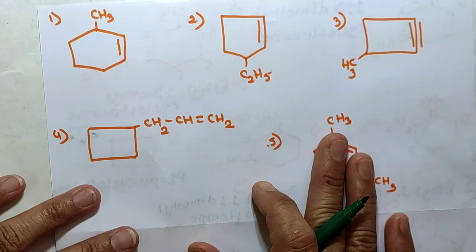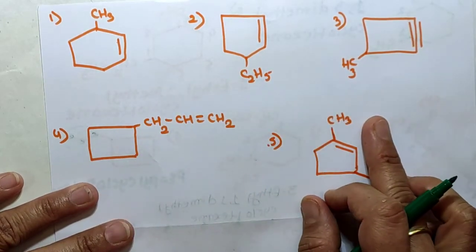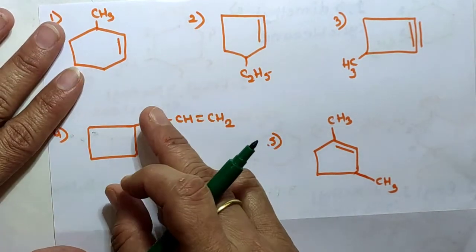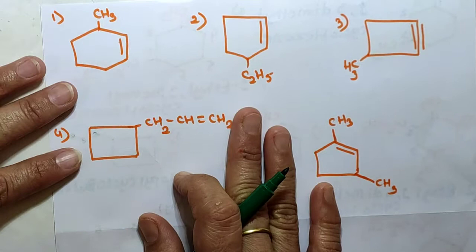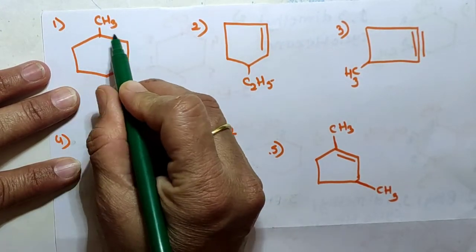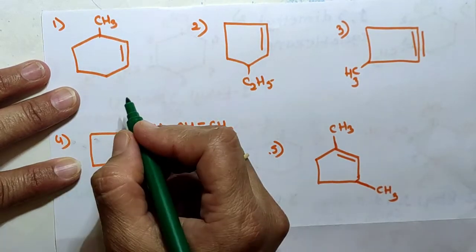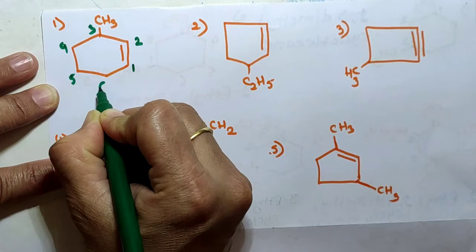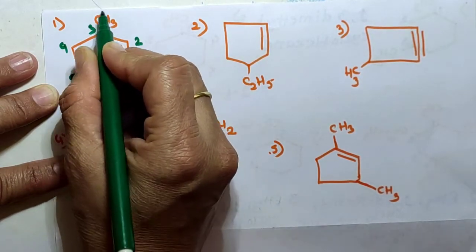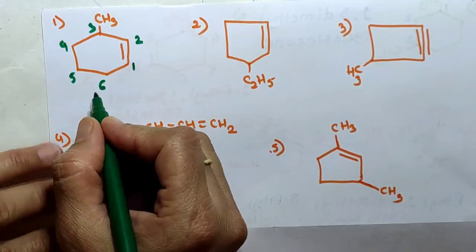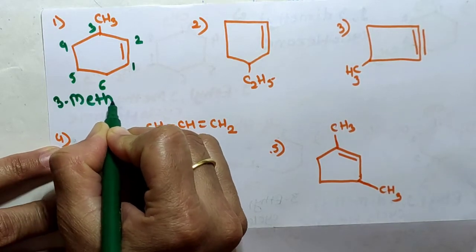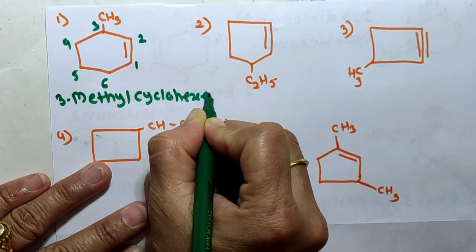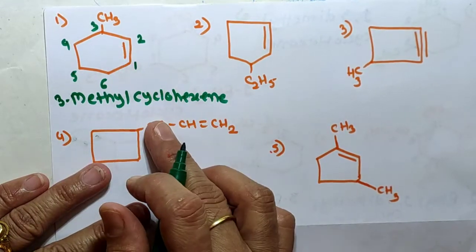For IUPAC naming of substituted cycloalkenes and cycloalkynes, the numbering of the double or triple bond starts at position 1 and 2. We choose the direction that gives the substituent the lowest possible number. Numbering starts from the double bond: 1, 2, 3, 4, 5, 6. The double bond is at positions 1 and 2, and a methyl group is at position 3. Therefore the name of this compound is 3-methylcyclohexene.